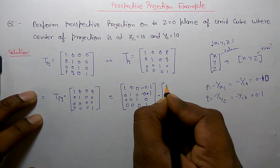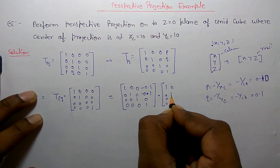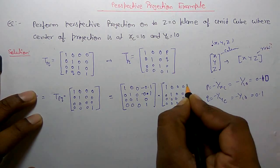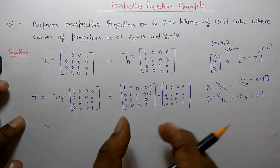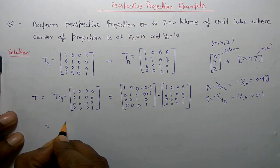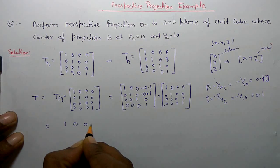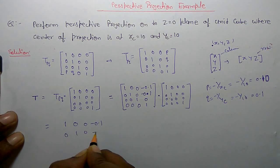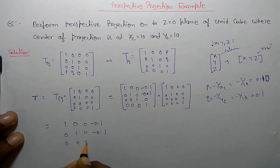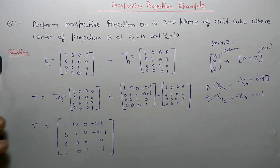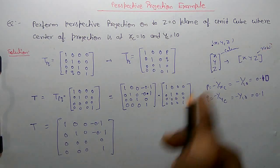Multiplied together, you will get the result: 1, 0, 0, minus 0.1 / 0, 1, 0, minus 0.1 / 0, 0, 0, 0 / 0, 0, 0, 1. So this is the transformation matrix for the projection.